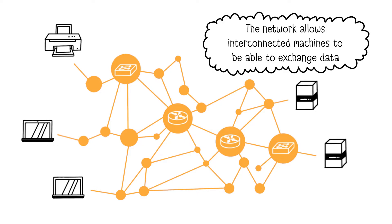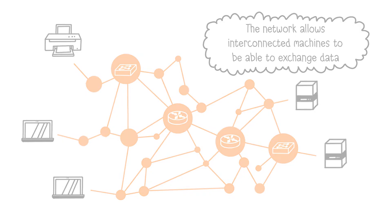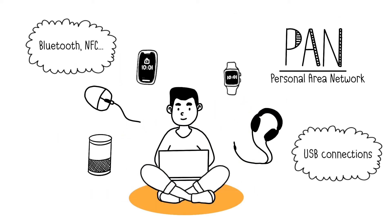Additionally, networks can be classified based on their geographical coverage: PAN, LAN, MAN, and WAN. PAN, or Personal Area Network, is a personal network covering a small area, allowing devices in the same vicinity to communicate.